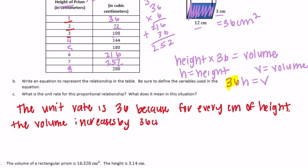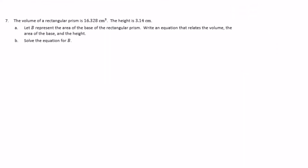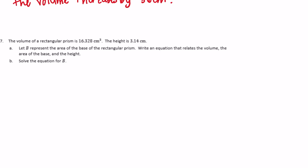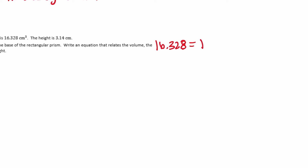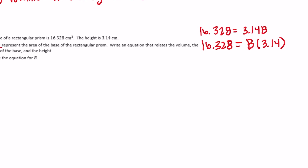Number 7: the volume of a rectangular prism is 16 and 328 thousandths centimeters cubed. The height is 3 and 14 hundredths centimeters. Let b represent the area of the base. Write an equation relating volume, area of the base, and height. The equation is: 16 and 328 thousandths equals b times 3 and 14 hundredths.